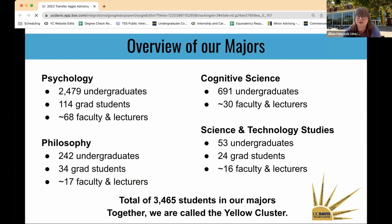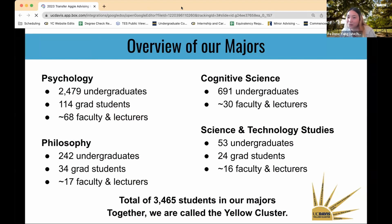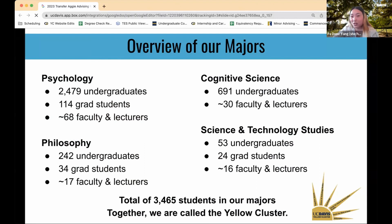Hi, my name is Padone and I'm also a staff advisor. We advise for four different majors: psychology, cognitive science, philosophy, and science and technology studies. We serve a large number of undergraduates within the yellow cluster across these majors and their respective faculty.